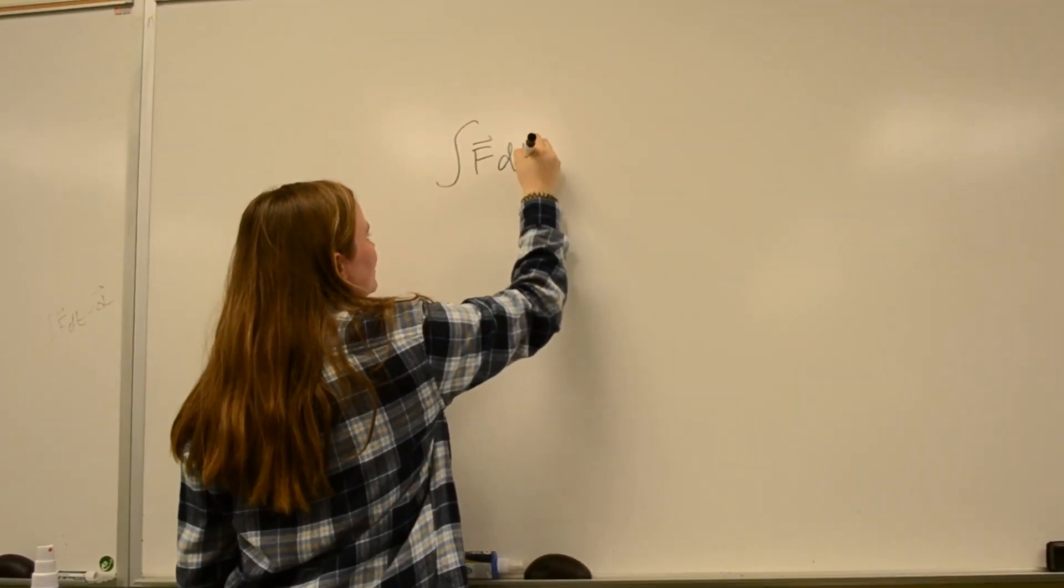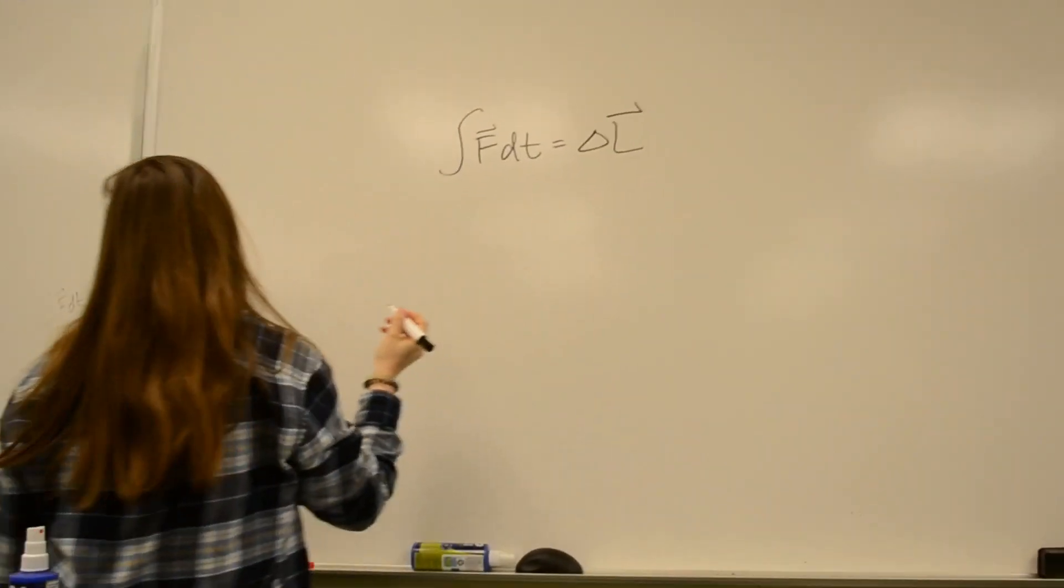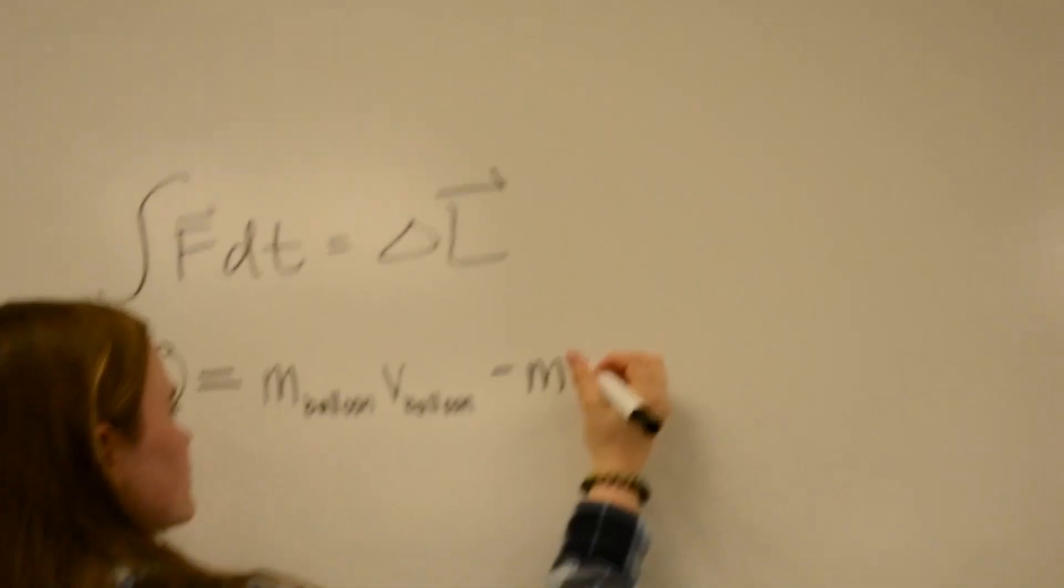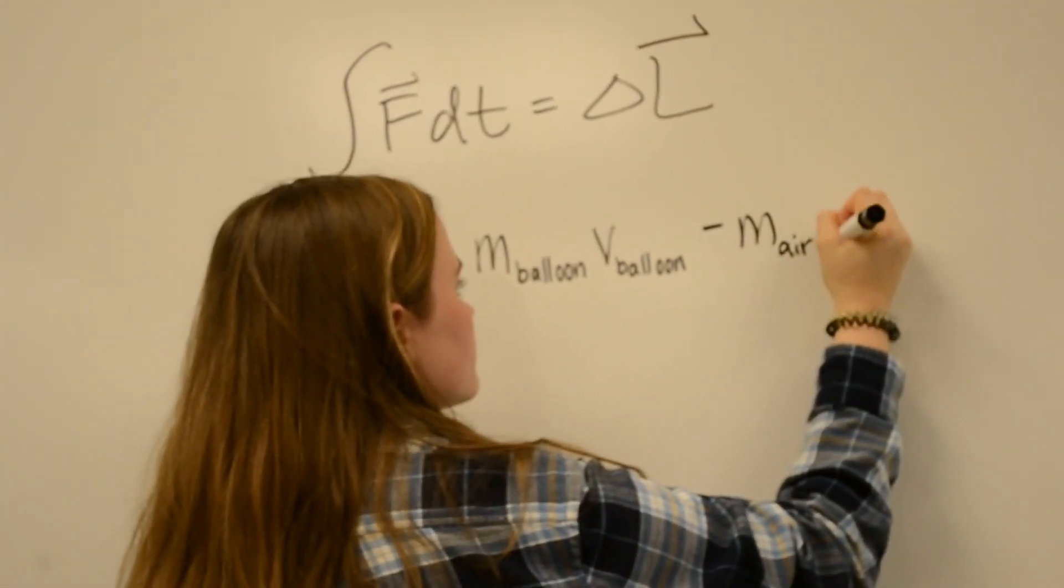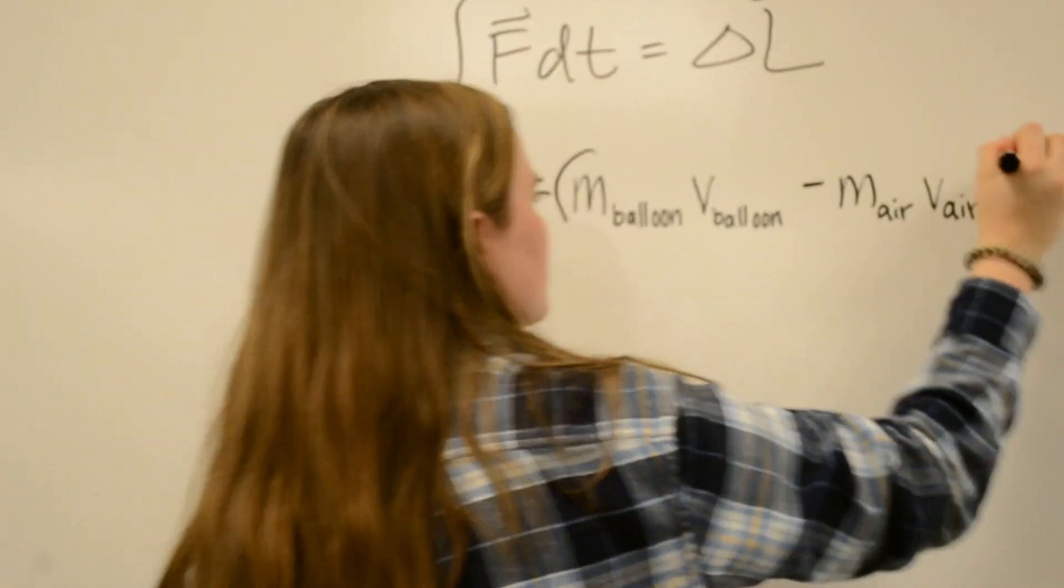We can show this in the following equation. The force exerted over time is equal to change in linear momentum. Since there is no external force in the x direction, then the left side of our equation is equal to zero.